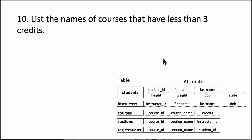This question says list the names of courses that have less than three credits. Until now we've been working with the students table, but you always have to look at the question and see which table or tables you're interested in.